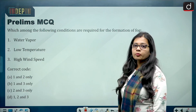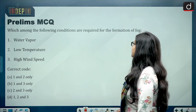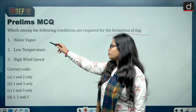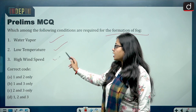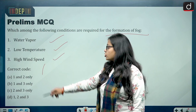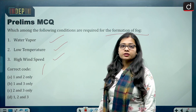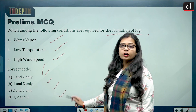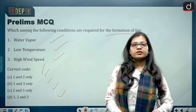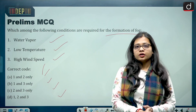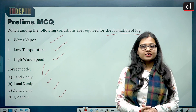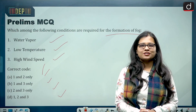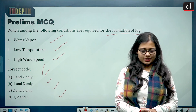For the prelims MCQ: which among the following conditions are required for the formation of fog — water vapor, low temperature, high wind speed? The codes are: 1 and 2 only, 1 and 3 only, 2 and 3 only, or 1, 2 and 3. Give the answer in the comment section. That's all for today — thank you so much for watching. Till we meet next time, keep reading and keep writing.